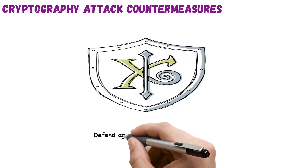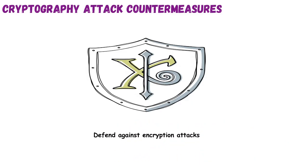Cryptography attack countermeasures. This topic covers how to defend encrypted systems from brute force, key theft, or algorithmic flaws. It's like adding motion sensors, guards, and better locks to protect a secure vault. Proper cryptography doesn't stop at strong algorithms — it requires secure key storage, updates, and correct use. Key countermeasures include using long, random keys, rotating them, and securing transmission and storage.